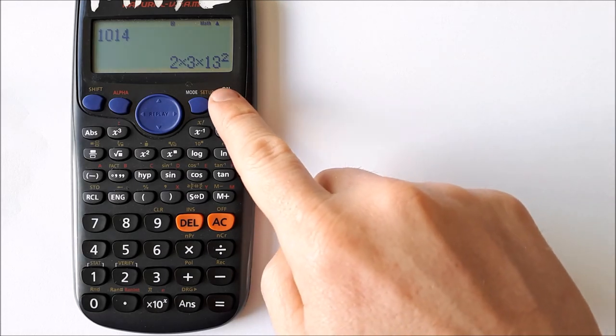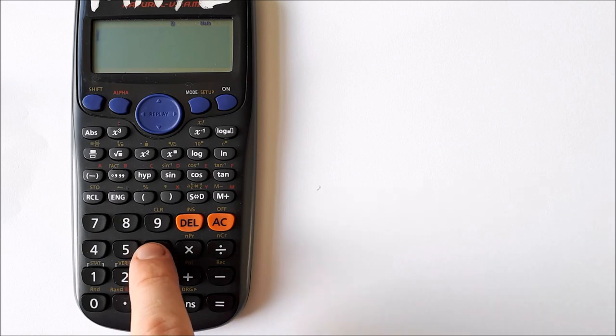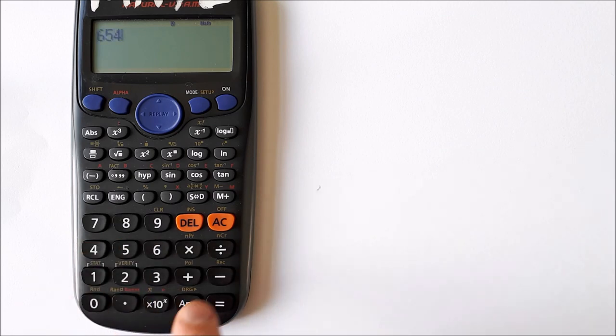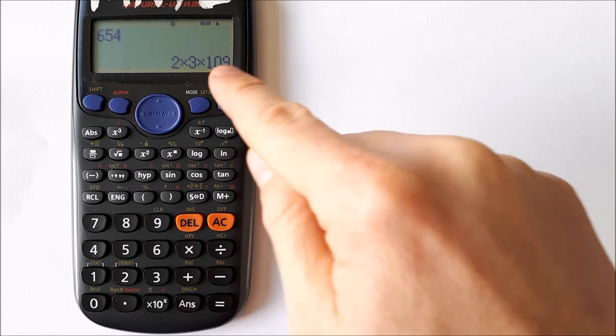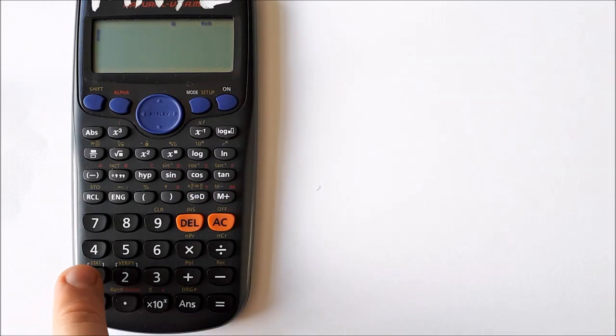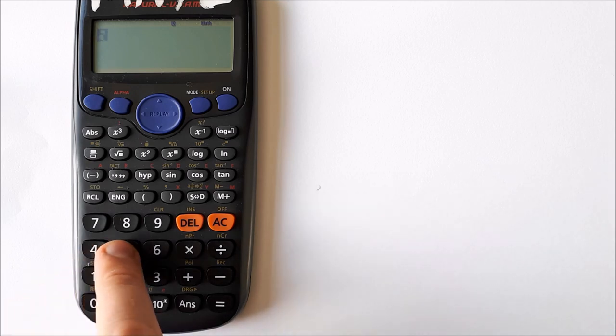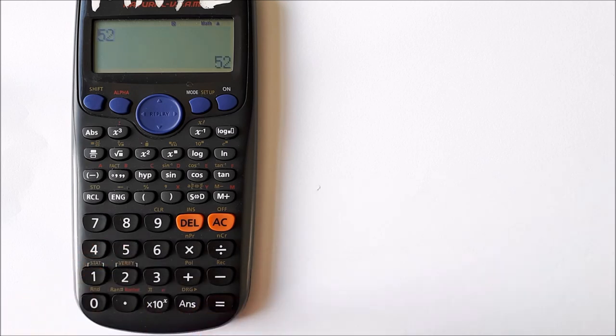Let's try a couple more examples. For 654: equals, shift, fact. So 654 is 2 times 3 times 109. Let's do another one, something smaller—52. Equals, shift, fact.